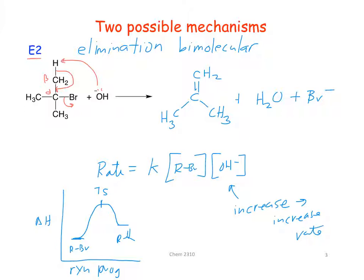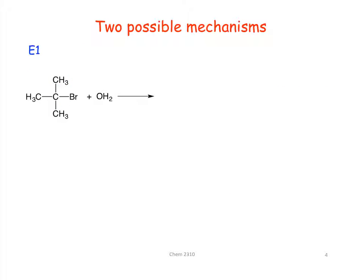So here's E1, so this is going to be unimolecular. So what's going to be the first step in this reaction then? Carbocation formation. So the halogen is going to come off. So this is going to form our carbocation.